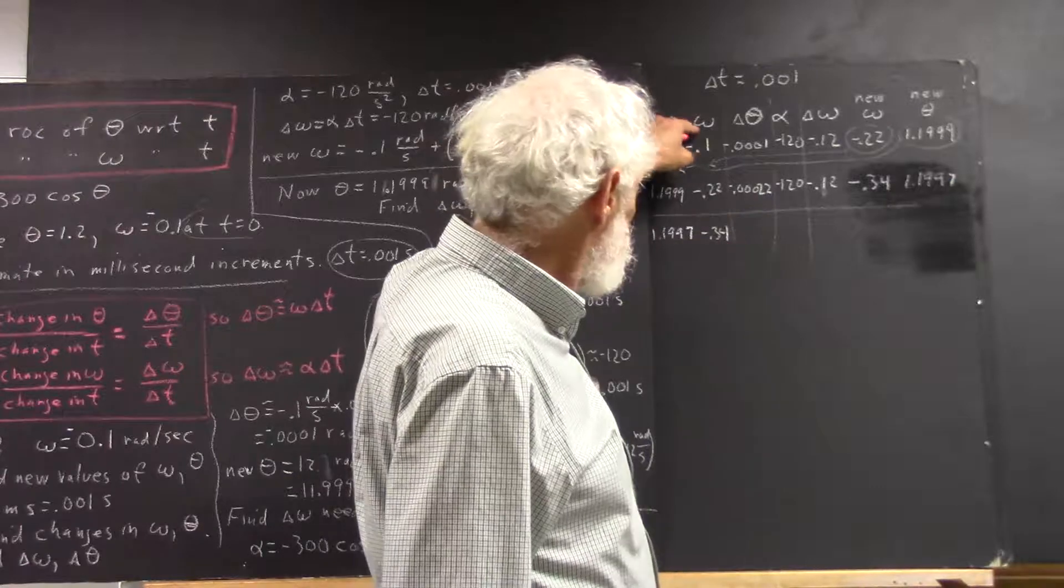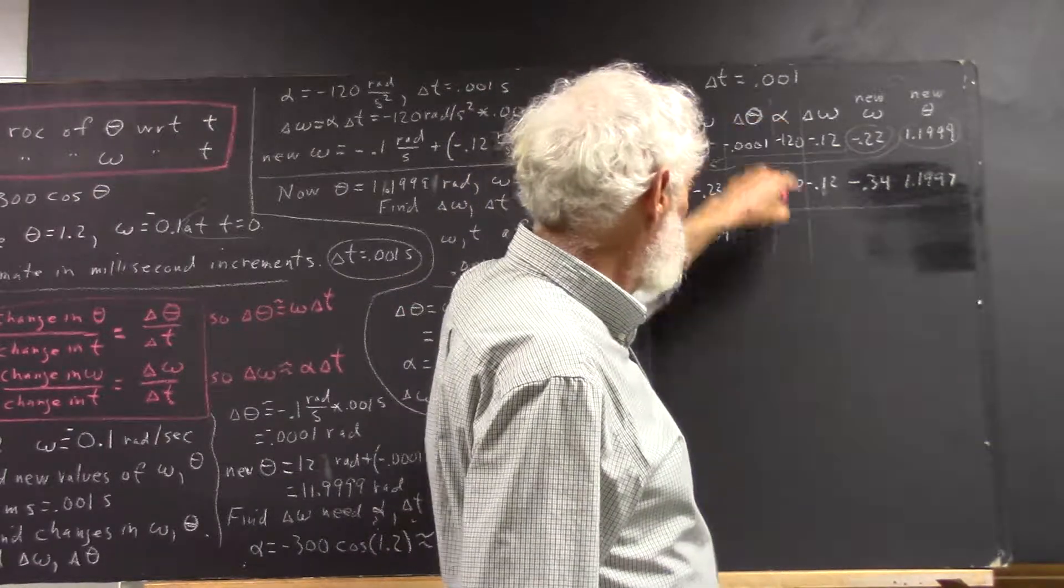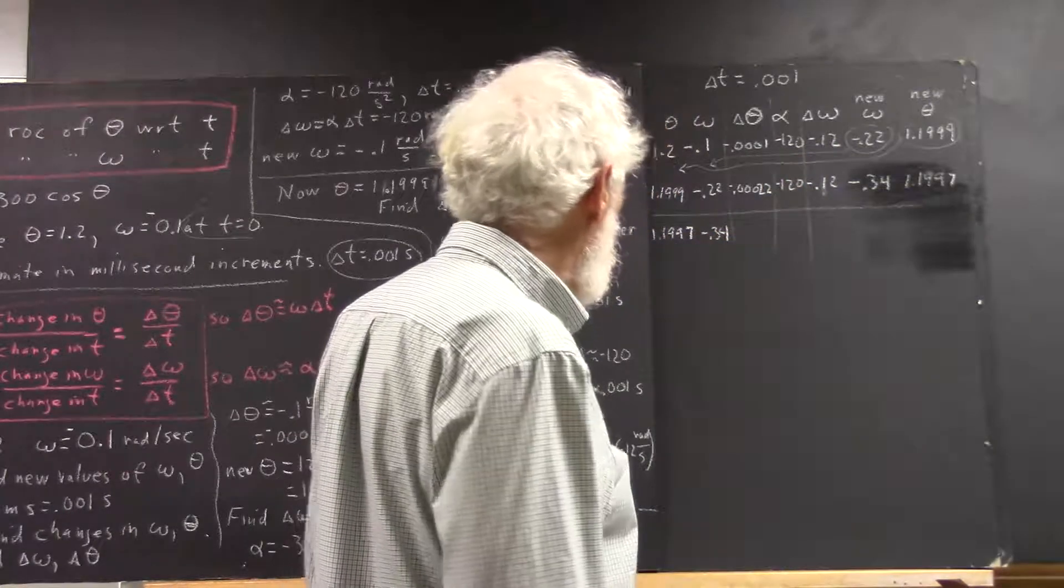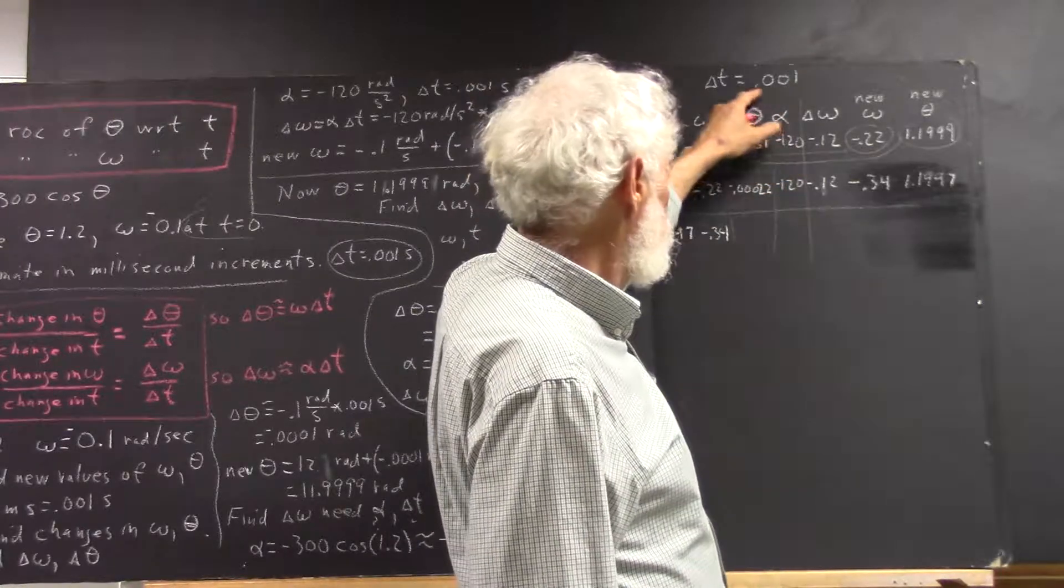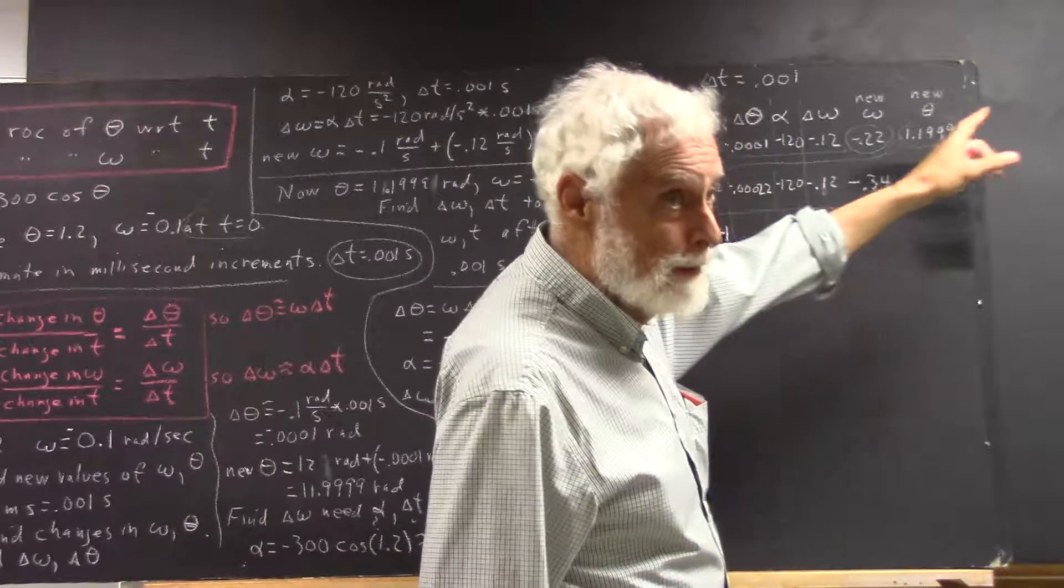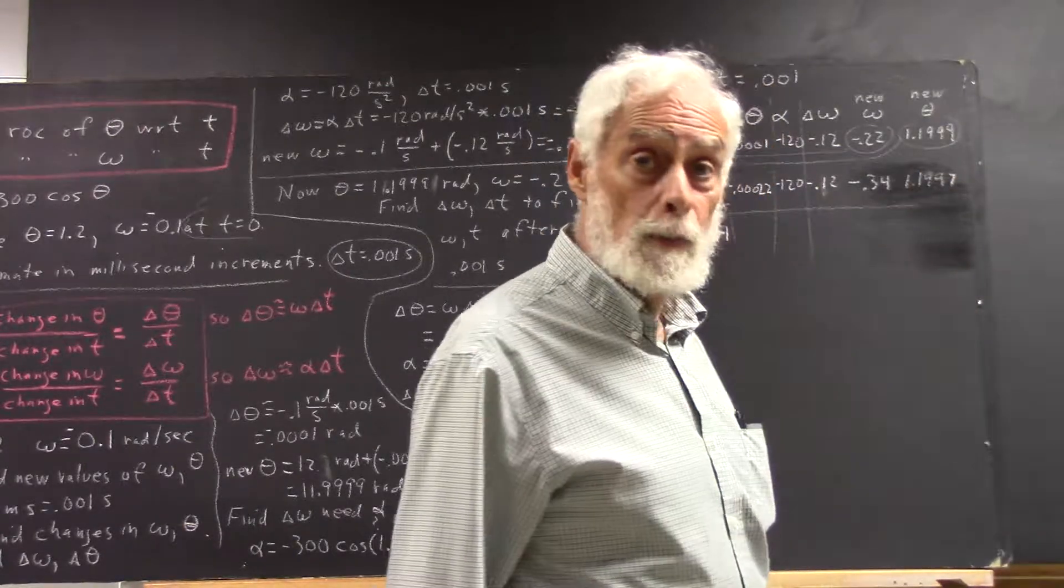Now we can calculate our delta theta based on our omega, based on our theta. We can calculate our alpha, which isn't going to have changed very much. And then based on our alpha and our delta t we get our delta omega, and then we add our delta omega to our omega and our delta theta to theta, and we get our new values of omega and theta. We just continue this, and within 200 steps I think you're going to find that it works.